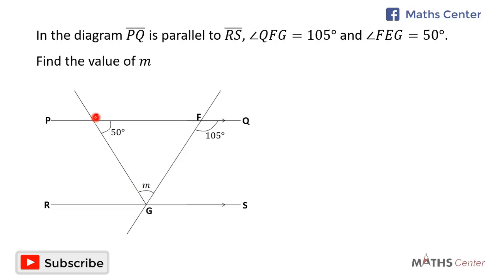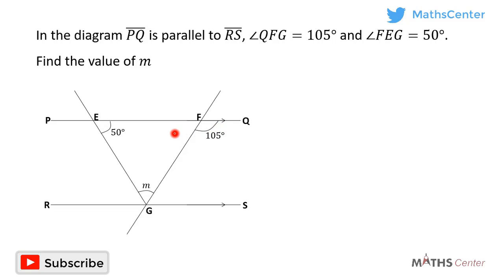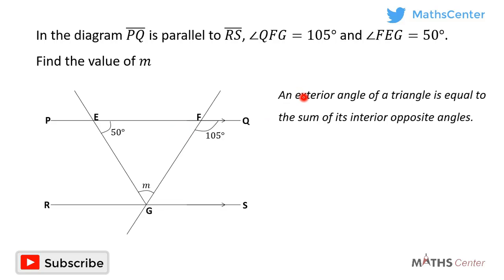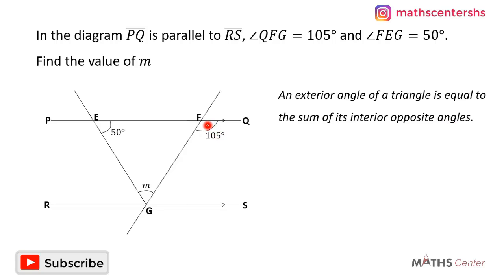When we consider the points E, G, F, we can see that they form triangle EGF. One of the properties of angles in a triangle is that an exterior angle is equal to the sum of its interior opposite angles.